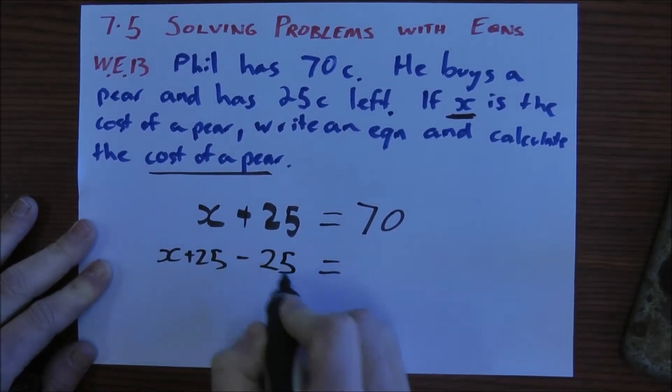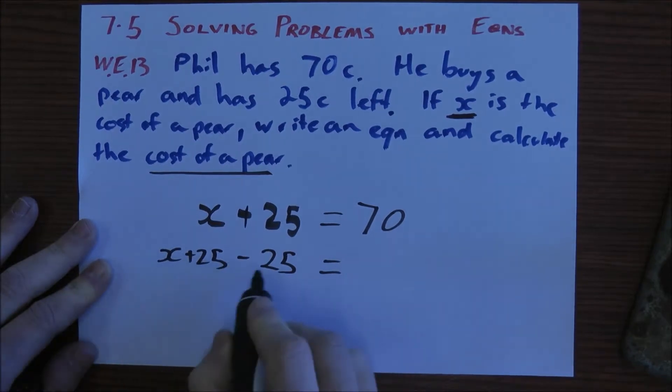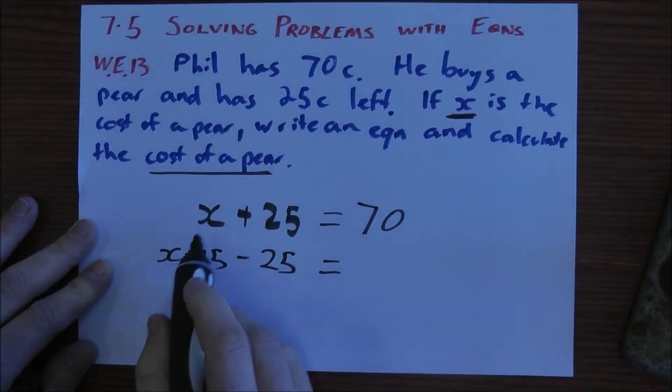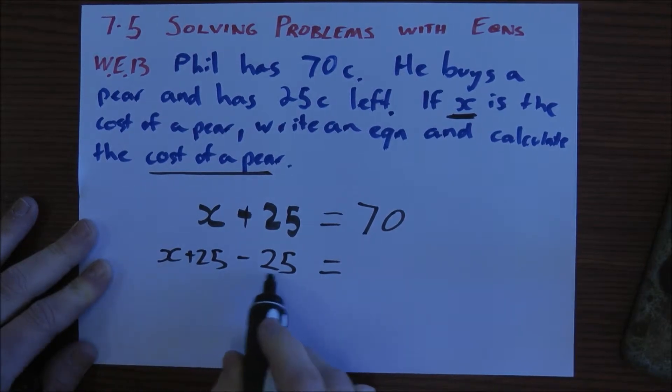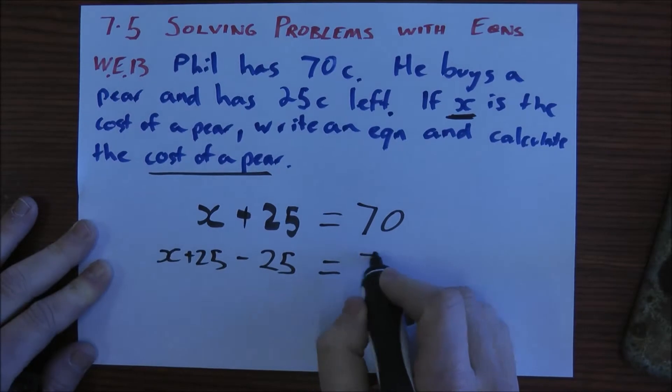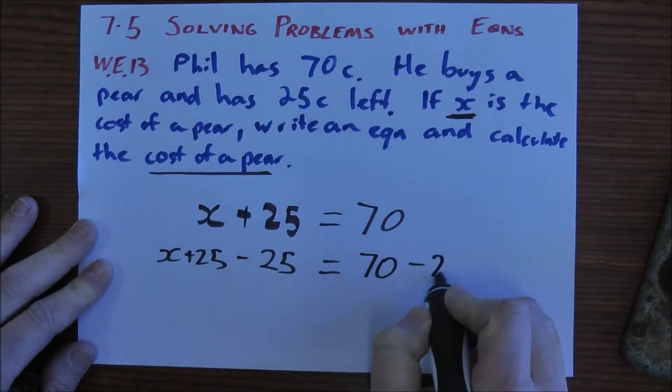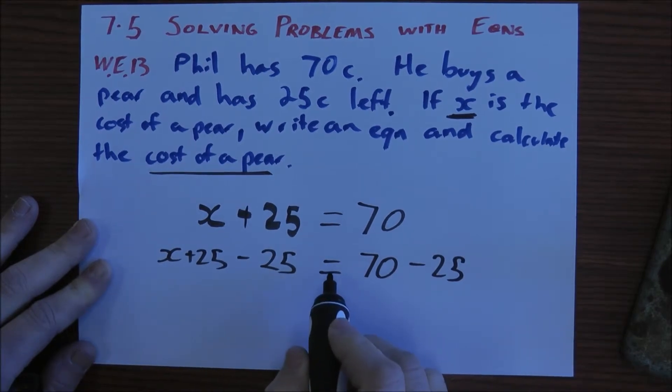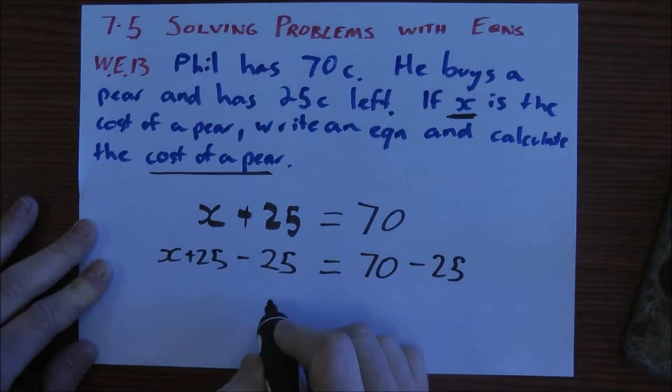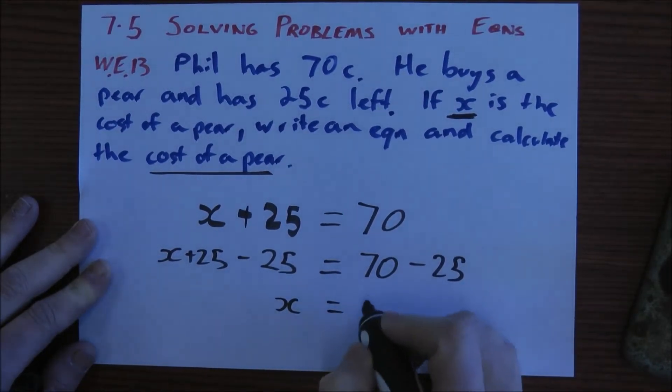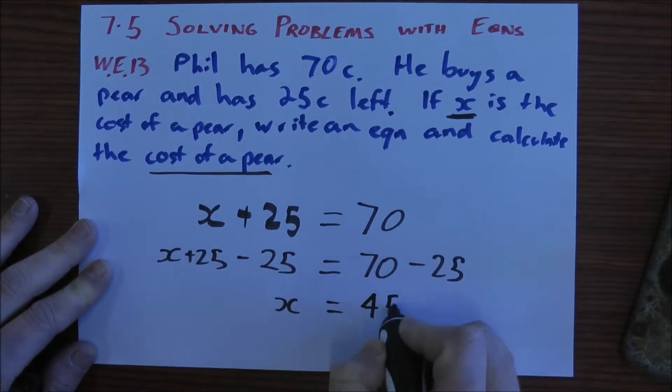If I subtract 25, they will equal 0 and leave me with X on its own. Notice when I wrote that, I moved out a little bit further to make space for this minus 25. This side, I've got 70 and I'm going to subtract 25 because if I subtract 25 from both sides, it still remains equal. On the left hand side, I'm left with X. On the right hand side, I've got 70 minus 25 which is 45.